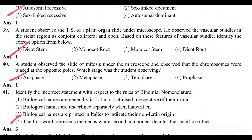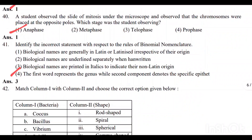Question number 39: The student observed a plant organ slide under the microscope and observed the vascular bundle arrangement. Option 1 — bicollateral system — is the correct answer. Question number 40: The student observed a slide under mitosis and chromosomes were placed at the opposite poles. Option 1 — anaphase — is the correct answer.